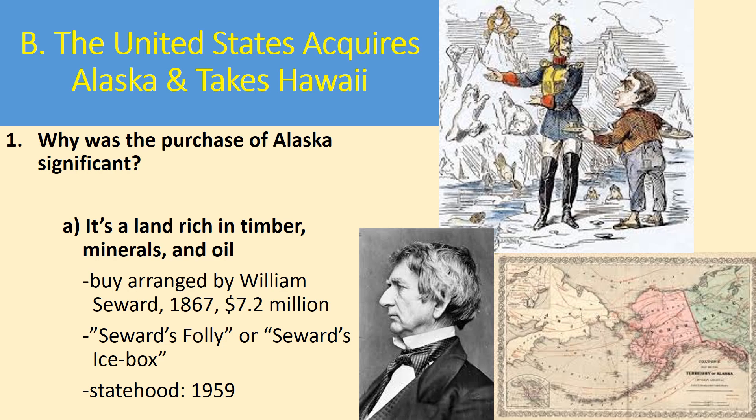Notice how close Alaska is to Russia. Russia needed to get rid of it because they feared that if they ended up in political turmoil with England and England won, they might have to give Alaska to England — which would make Canada more powerful and put England right next to Alaska. So Russia saw the United States as a better option to sell to, especially since US-Russian relations were fairly strong during and shortly after the Civil War.